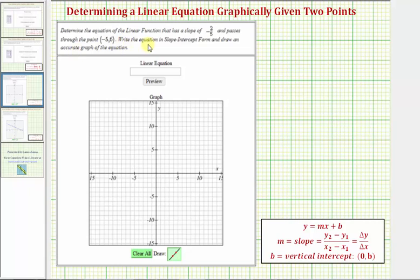We're asked to determine the equation of the linear function that has a slope of negative 2 fifths and passes through the point negative 5 comma 6. We're going to write the equation in slope-intercept form and draw an accurate graph of the equation.